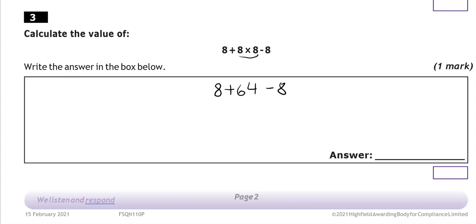Now we've got addition and subtraction, so we can do them in the order they're given to us. So 8 + 64, that is going to be 72. Take away 8. 72 - 8 is 64. So the final answer is 64.